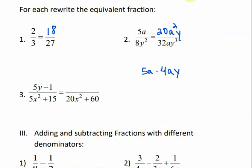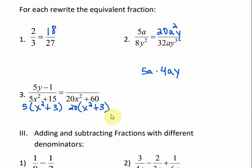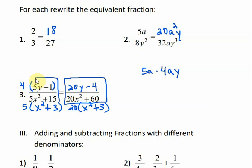For number 3, first let's factor to see what we have. I have a greatest common factor here of 5, and then this would leave me with x squared plus 3. Here I have a greatest common factor of 20. If I divide by 20, I'm left with x squared plus 3. So you see these two parts are the same. The only thing I would need to do to get this to look like this denominator is multiply the 5 times 4. So all I need to do is multiply this times 4, and that would give me 20y minus 4. So this is my equivalent fraction, and that's how we get equivalent fractions.